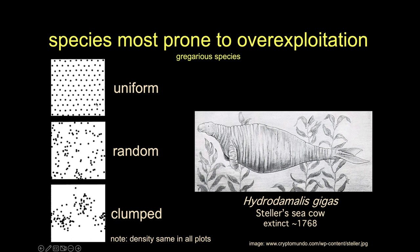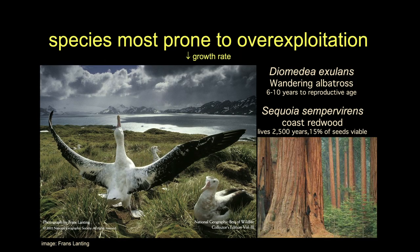Uniform distribution is harder to exploit, random is also harder, but clumped distribution is relatively easy. That's what our Steller's sea cows had — you could just walk up and get a bunch of them at once. For low growth rate, a good example is wandering albatrosses, which are very long-lived and don't necessarily have a baby every year. Similarly, coast redwoods — only about 15% of the seeds set in any given year are actually viable. Both have evolved to be very old individuals that reproduce slowly, which is bad in a context of over-exploitation.